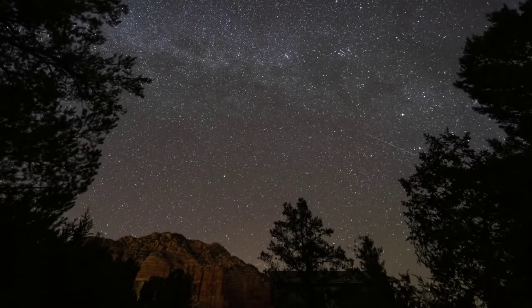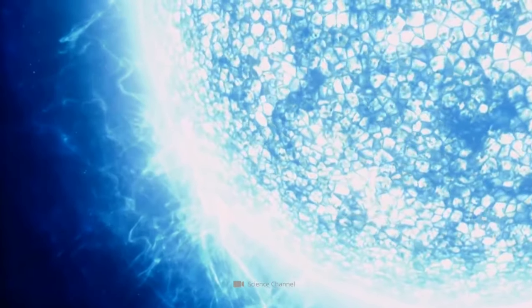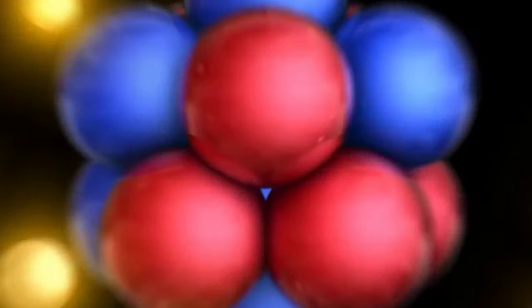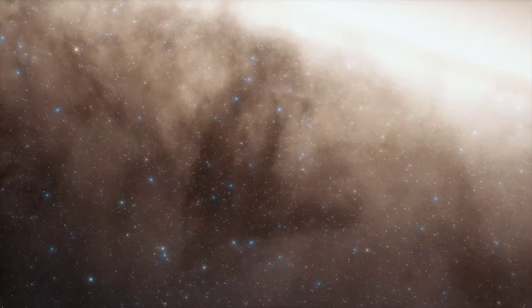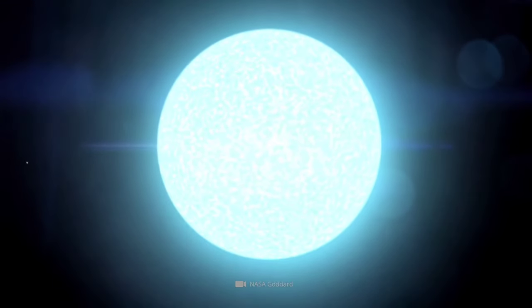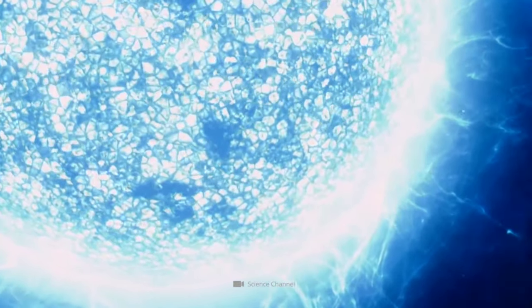Its period, like all pulsars, is subject to a very slight but constant variation, which in the case of J0030 was calculated to be 1.02×10^-20 seconds per second. It means that the rotation period increases by one hundred billionth of a billionth of a second per second, a variation so small that J0030 and other pulsars could be used to measure time with precision comparable to the best atomic clocks.